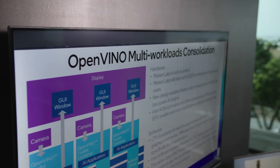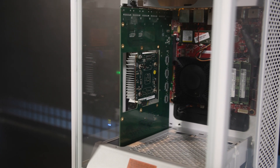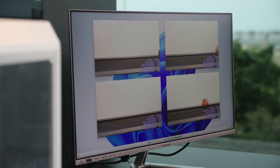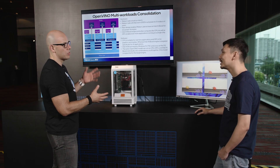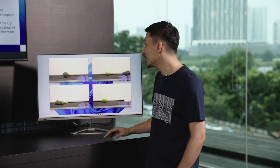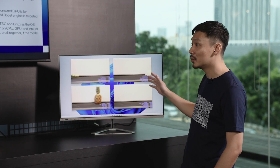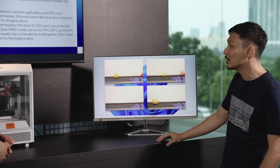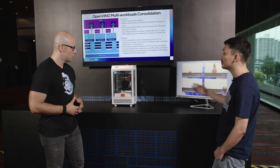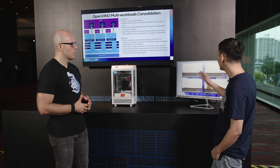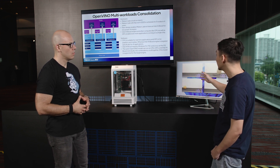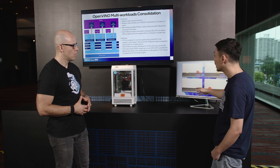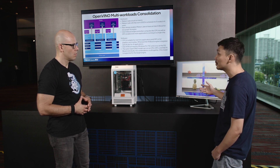So we have here OpenVINO and Meteor Lake hardware, and I see a lot of fruit and vegetables going on on the monitor. Today we are demoing multiple workloads running on a single Meteor Lake system. Meteor Lake has a lot of processing units — we are running using the CPU, the integrated GPU, as well as the integrated NPU, the neural processing unit.